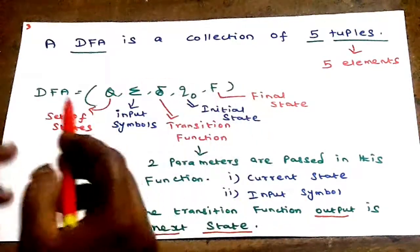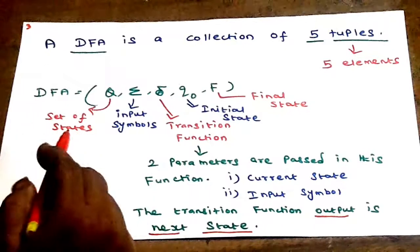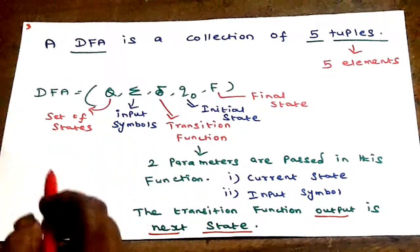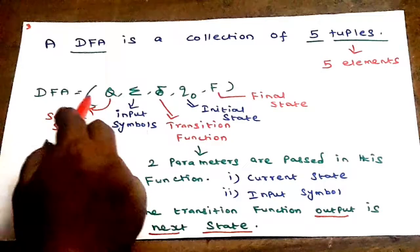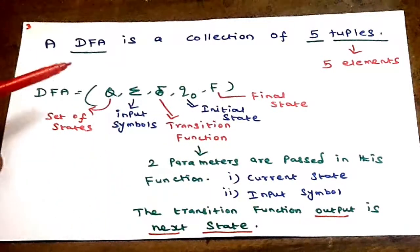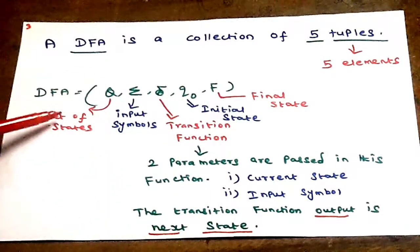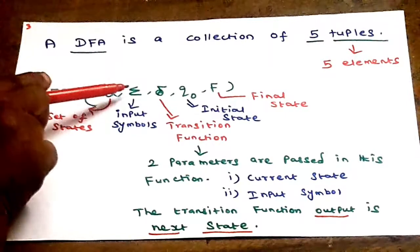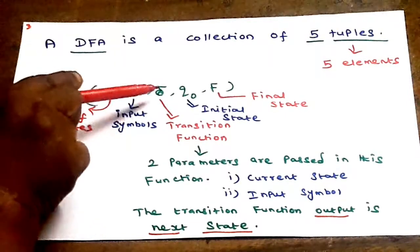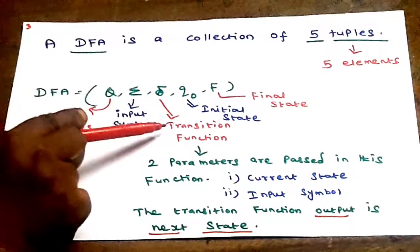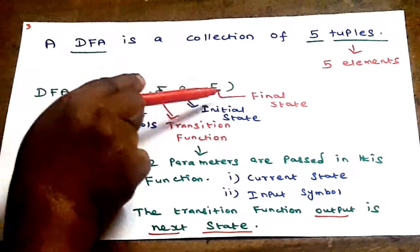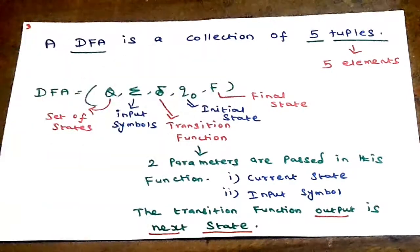Remember the five elements — the five tuples of DFA. The first symbol represents the set of states. Next are the input symbols. Next is the transition function. Next is the initial state. The last one is the final state.